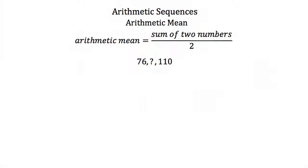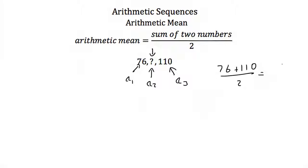Let's say we're given the arithmetic sequence 76, some missing number, and 110, and we want to find the missing number. 76 is a_1, the missing number is a_2, and 110 is a_3. To find a_2, we use the arithmetic mean: add 76 and 110, then divide by 2. 76 plus 110 is 186, and 186 divided by 2 is 93. So the second term in our sequence is 93, and our sequence is 76, 93, and 110.